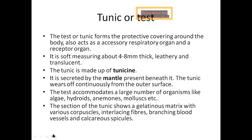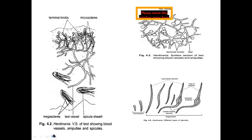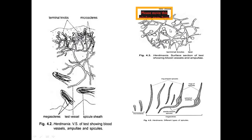If you take a section of the tunic and examine it, it appears to have a gelatinous matrix with various corpuscles, interlacing fibers, branching blood vessels, and calcareous spicules. In the picture showing a vertical section of the tunic, there is clear visibility of microscleres, megascleres, and test vessels — blood vessels and spicules are present. The magnified image also shows the presence of different types of spicules forming the test or tunic.